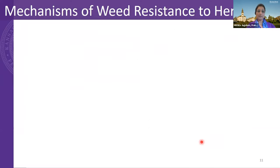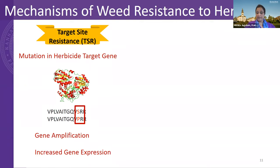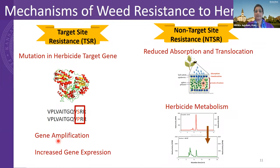The mechanisms that confer herbicide resistance can be grouped into two types. The first is target site resistance, where any alterations to the herbicide target — which could be a protein in the plant — can make the plant insensitive to the herbicide. This can occur because of mutations in the gene coding for the herbicide target, leading to modification of the target protein. It can also be due to amplification or duplication of the herbicide target gene, resulting in increased gene expression.